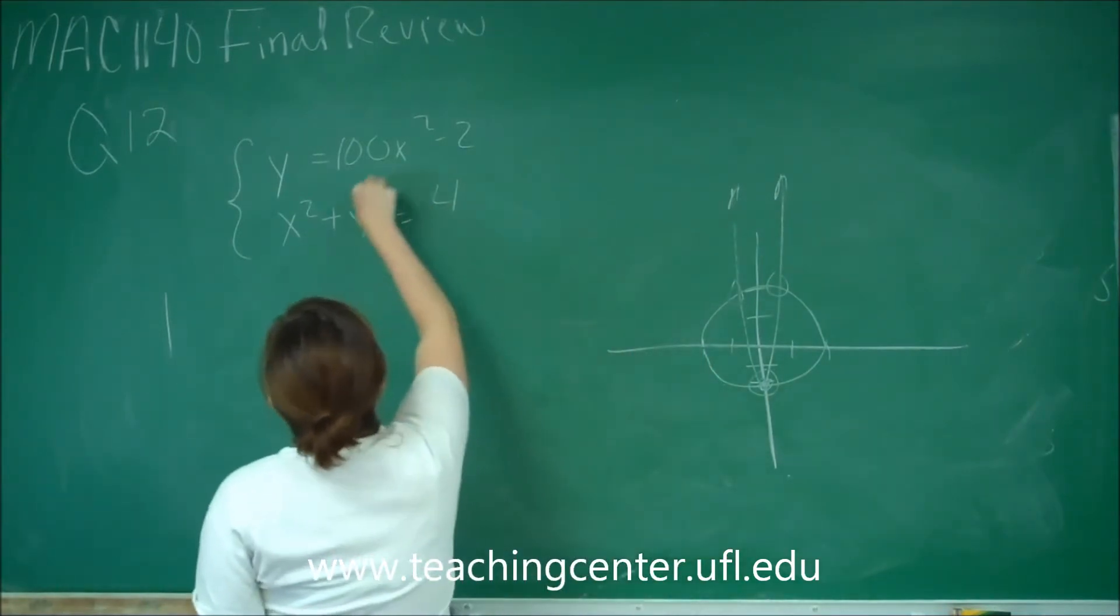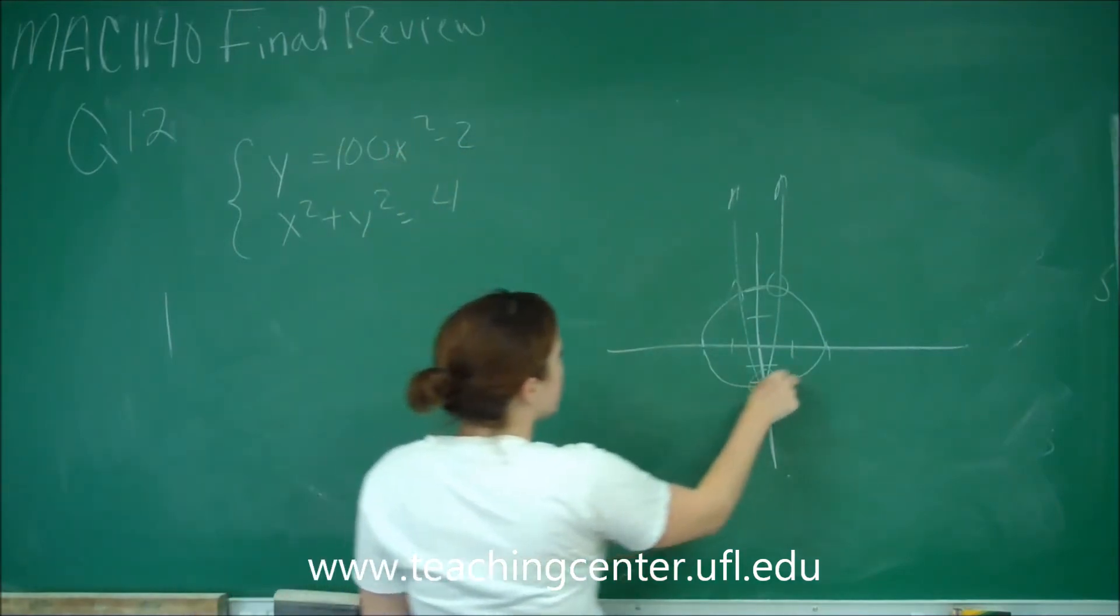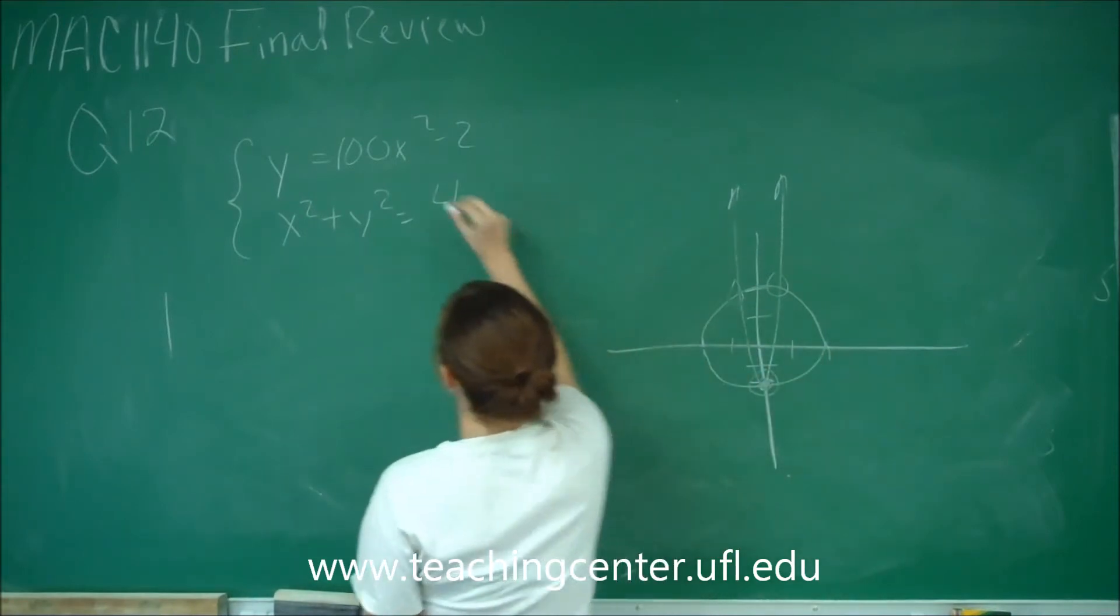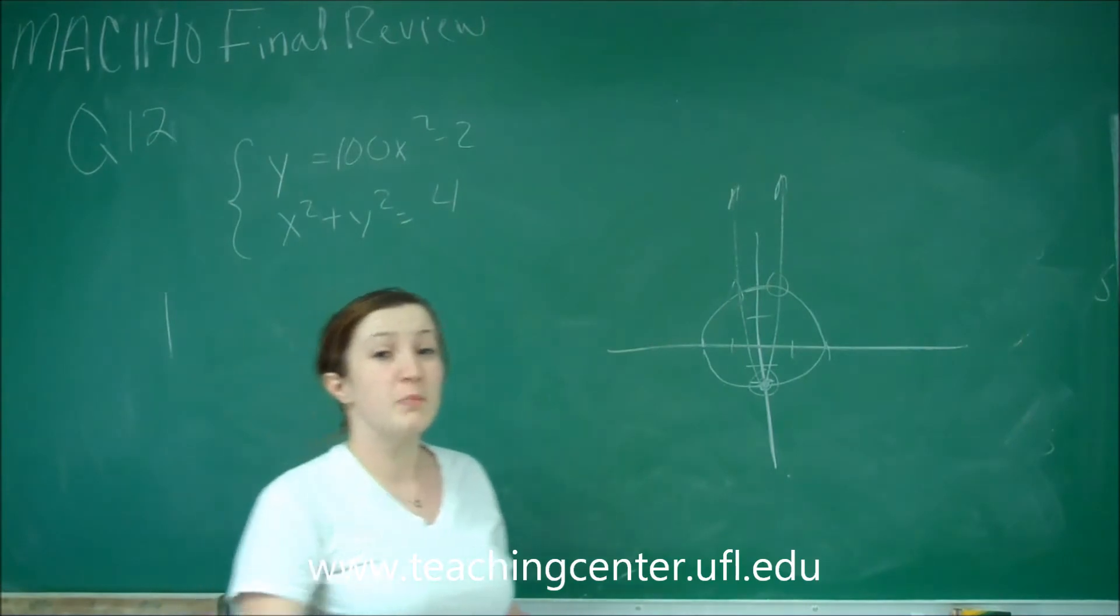And then I know that when x equals 0, y equals negative 2 for this parabola. And then I just plugged in 1 and I got 100 minus 2 is 98. So at 1 it's all the way up at 98.